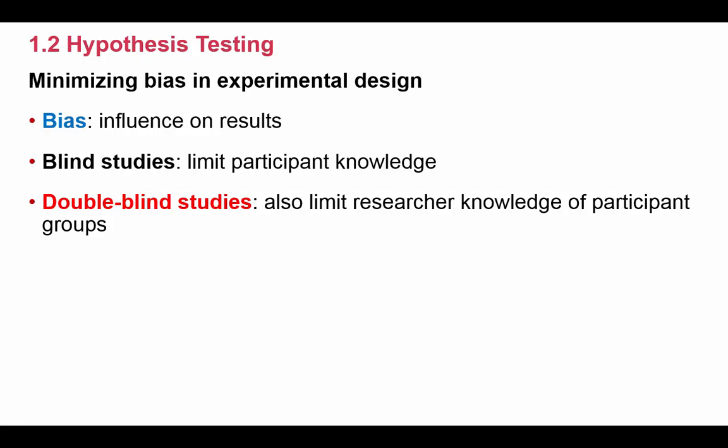In science, though, and especially in experience, we want to be very objective. Objective means very factual, lack of opinions. And the reason we want to be objective is because you can prove facts. You cannot prove opinion. So one of the things that we try to do in experimental design is we try to minimize bias in our experiments. One of the ways we do that is blind studies.